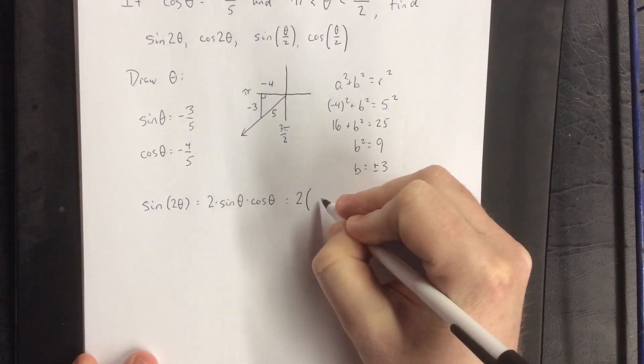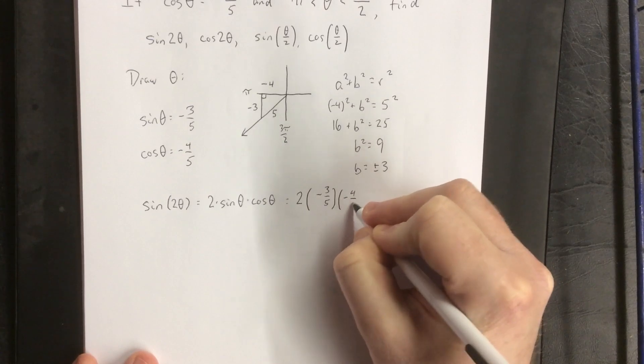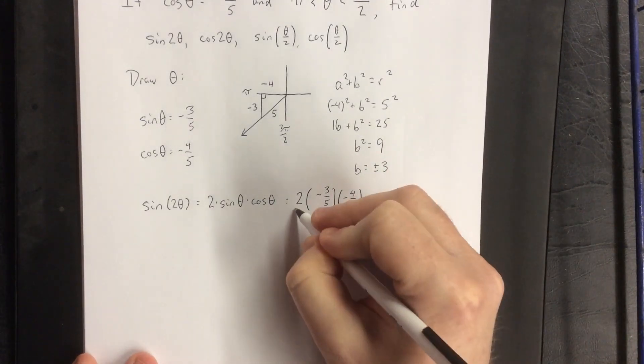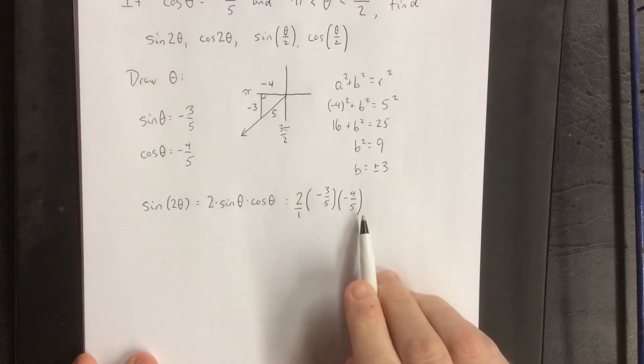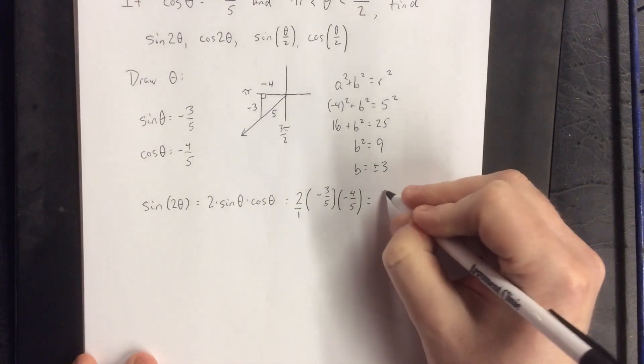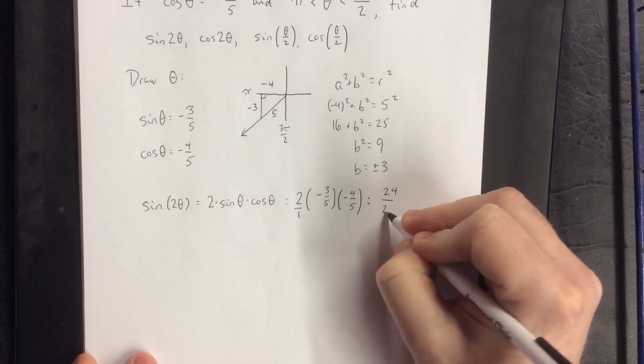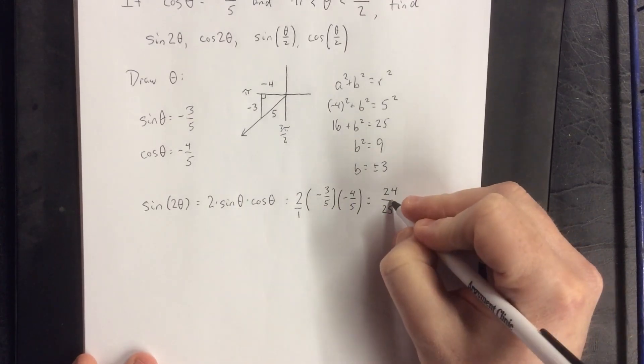So that's going to be 2 times sine of theta is negative three-fifths, and the cosine of theta is going to be negative four-fifths. I'm going to treat the 2 as though it's a 2 over 1, so that I can just multiply all the numerators and multiply all of the denominators and be done. 2 times 3 times 4 is 24. 1 times 5 times 5 is 25. Negative times negative is positive, so we are all set.